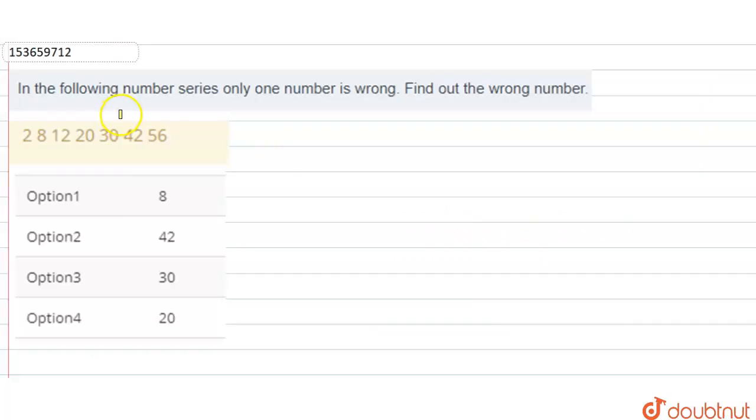Hello everyone, the question is: in the following number series, only one number is wrong. Find out the wrong number. So, we have to find out the wrong number in this series. What is our series? That is, 2, 8, 12, 20, 30, 42, 56.